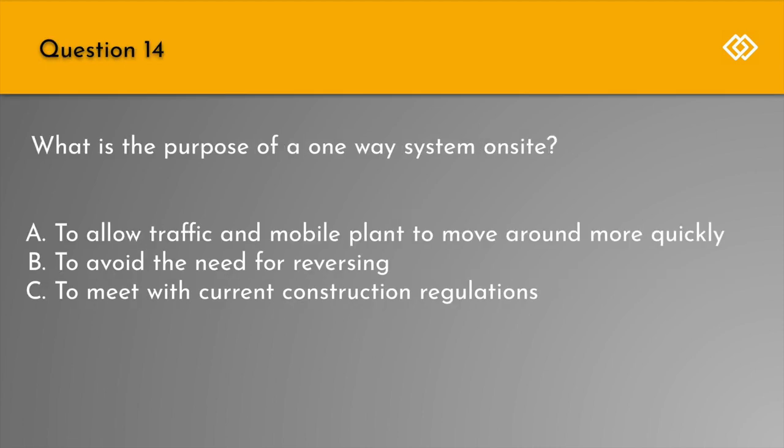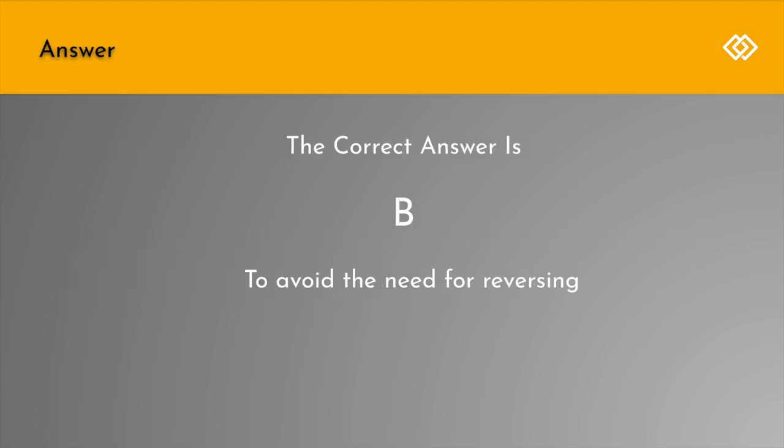Question 14. What is the purpose of a one-way system on site? A. To allow traffic and mobile plant to move around more quickly. B. To avoid the need for reversing. Or C. To meet with current construction regulations. The correct answer is B: To avoid the need for reversing.